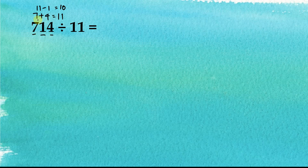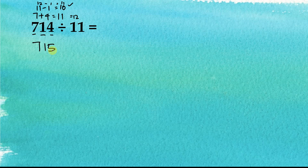We can see that the sum of the odd digits is 11. If the sum were equal to 12, then 12 minus 1 equals 11, making the number divisible by 11. So to make this number divisible by 11, we add 1 to it, giving us 715. Then 714 equals 715 minus 1, so 714 divided by 11 equals (715 minus 1) divided by 11.